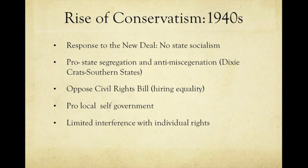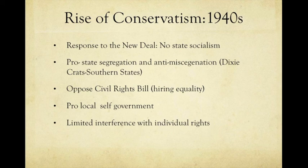Conservatives opposed the Civil Rights Bill. They didn't believe in hiring equality or quotas based on race, which came about because of the Civil Rights Bill in the 1960s. Conservatives believed in pro-local self-government and limited interference with individual rights. For the Dixiecrats, they saw segregation as an individual right.